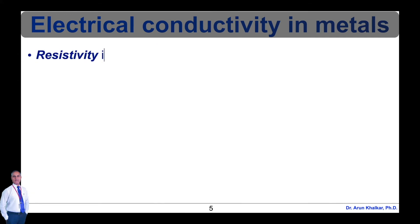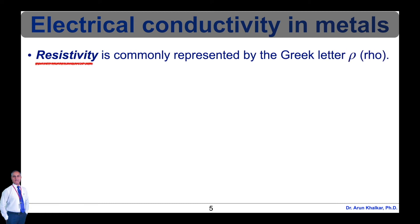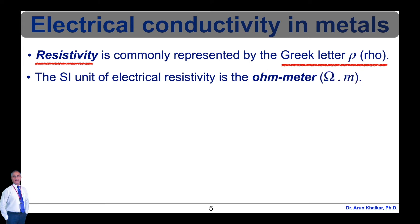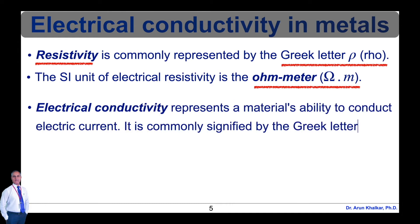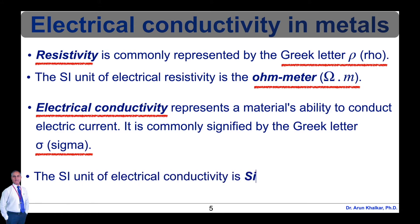Resistivity is commonly represented by the Greek letter rho. The SI unit of electrical resistivity is the ohm-meter. For example, if a 1m × 1m × 1m solid cube of material has sheet contacts on both opposite faces and the resistance between these contacts is 1 ohm, then the resistivity of the material is 1 ohm-meter. Electrical conductivity, or specific conductivity, is the reciprocal of electrical resistivity. It is commonly signified by the Greek letter sigma, though kappa and gamma are sometimes used. The SI unit of electrical conductivity is siemens per meter, notated as capital S.